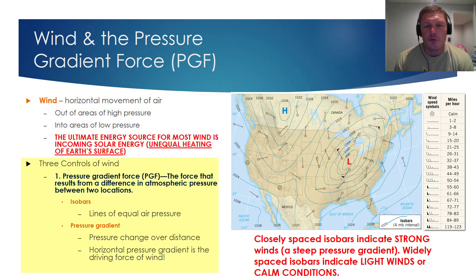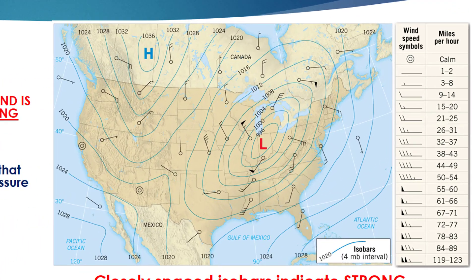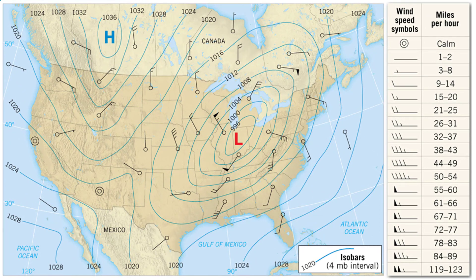Now let's talk about the three controls of wind, the first of which is the pressure gradient force. The pressure gradient force is the force that results from a difference in atmospheric pressure between two locations. On the pressure map on the right side of this slide, the lines separating areas of different air pressures are called isobars. Focusing on the section from Chicago to central Illinois, around where Decatur is, both locations fall between the same isobars and will be experiencing equal air pressures.